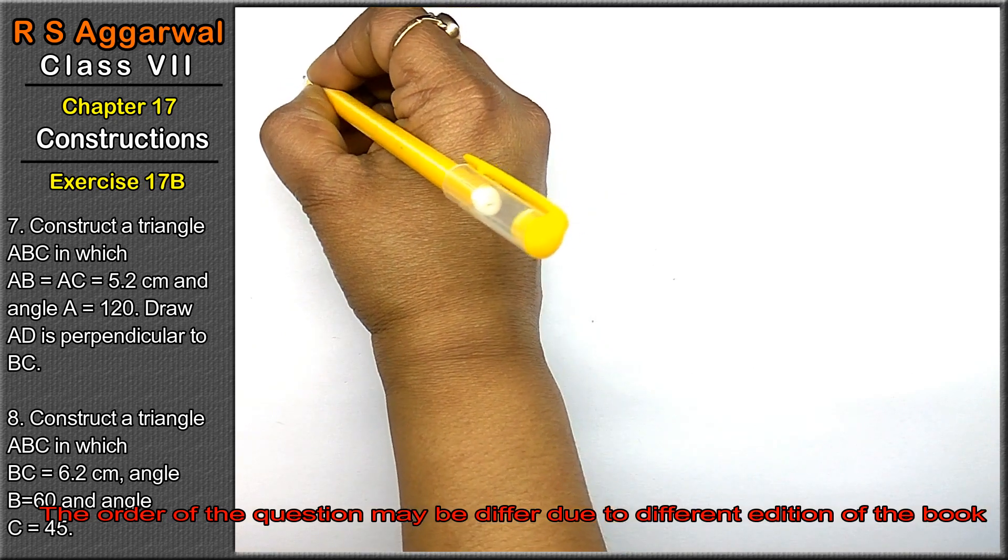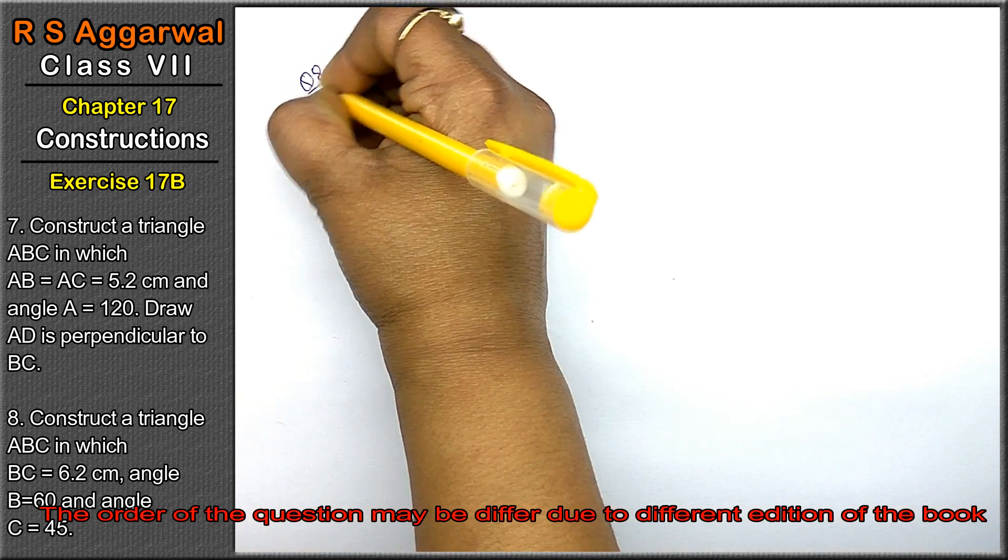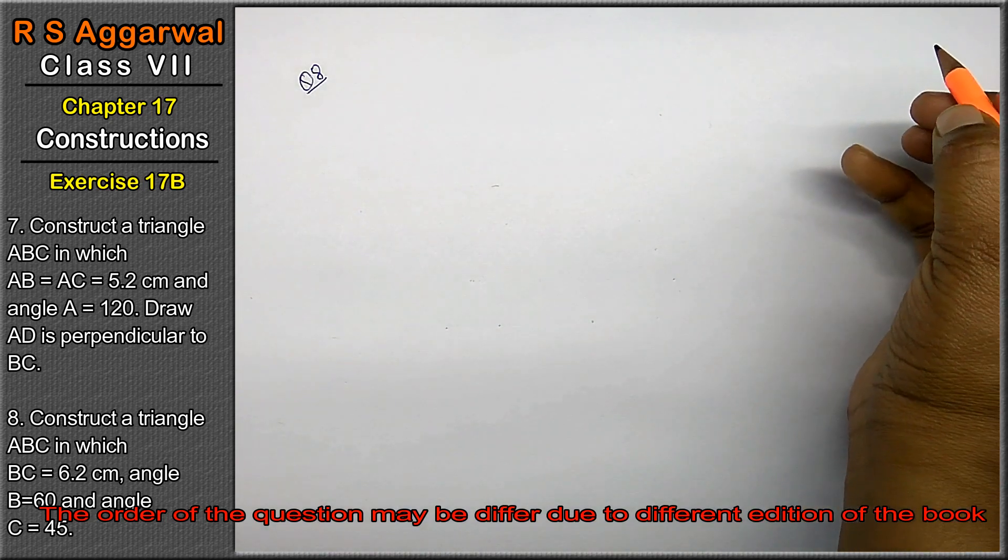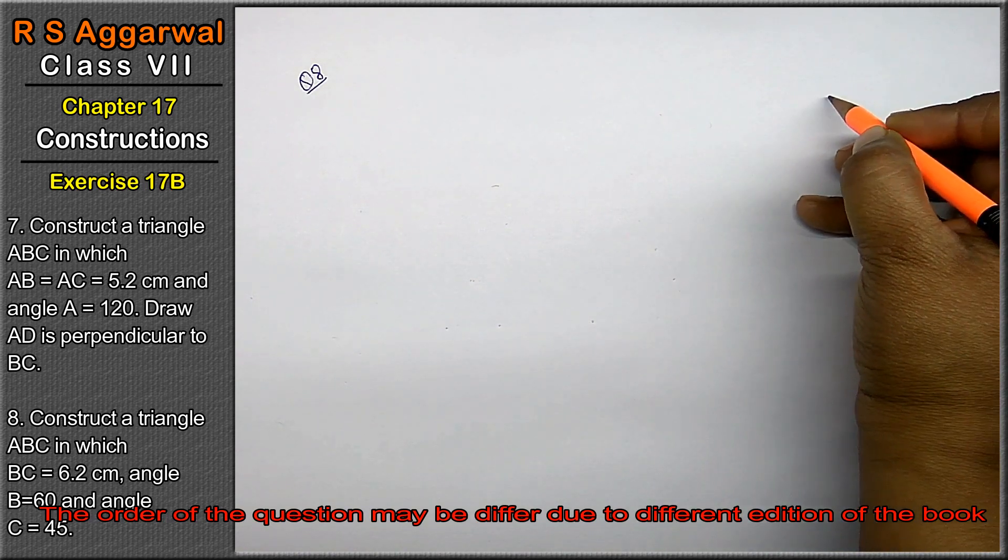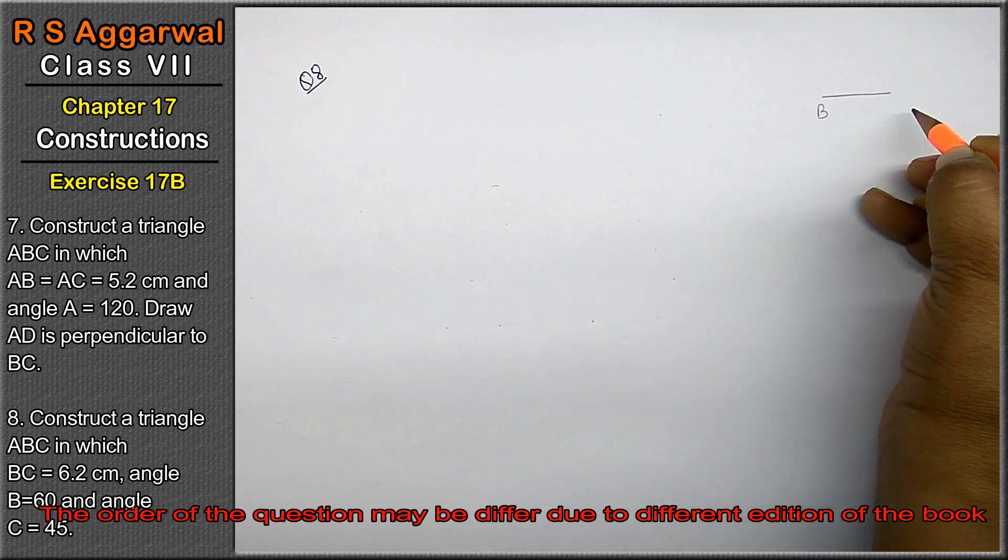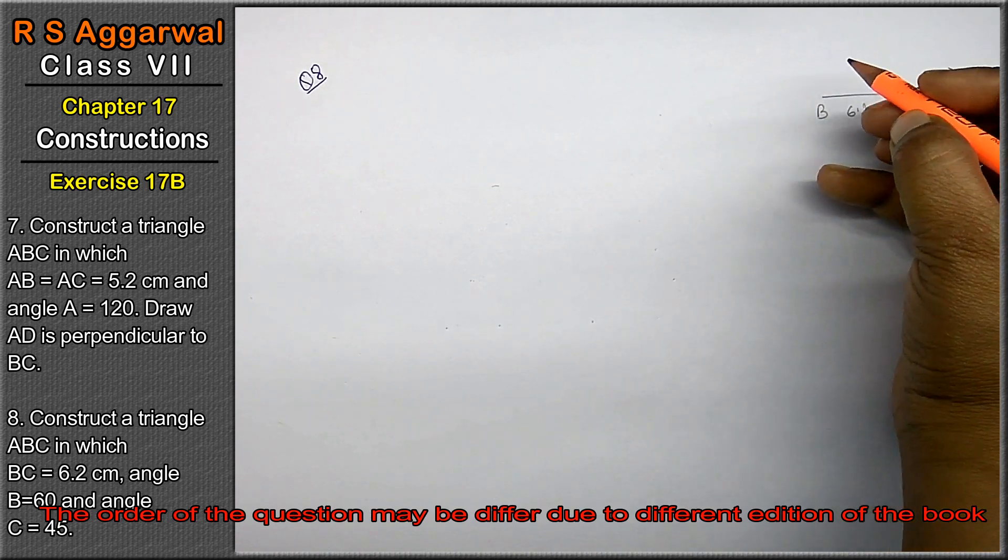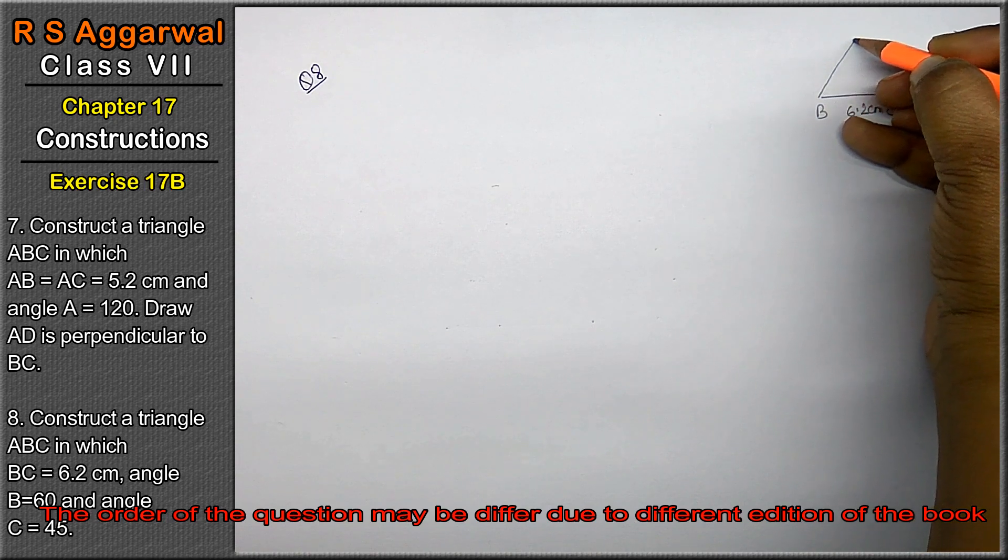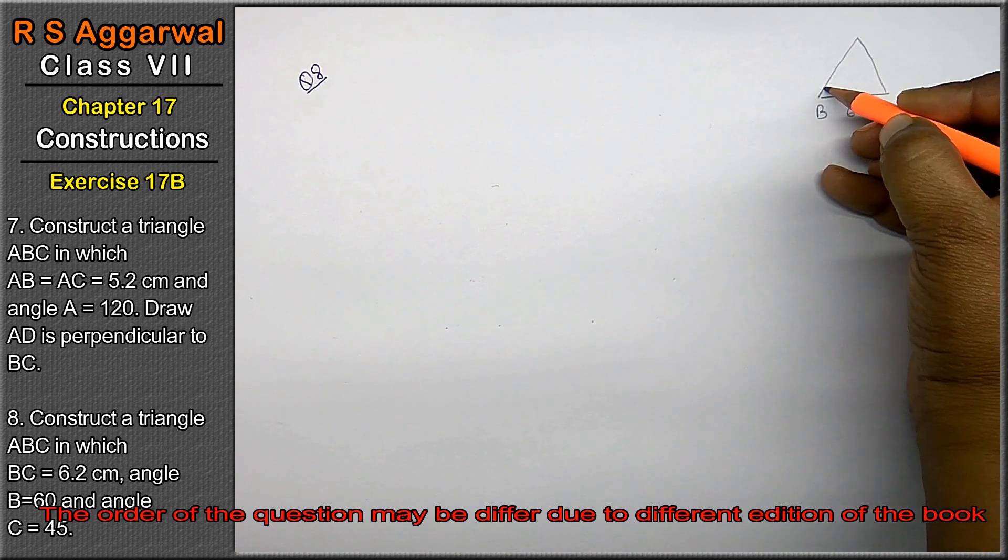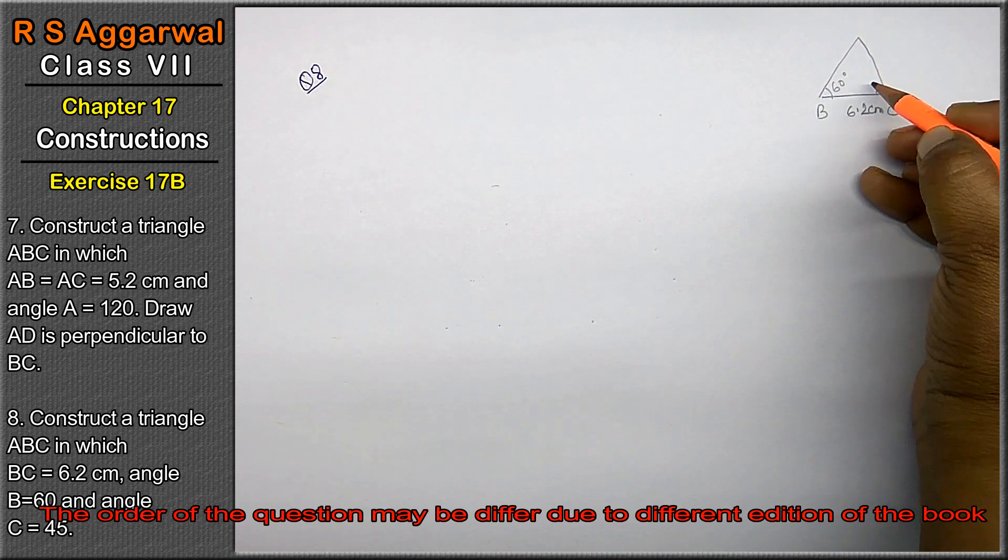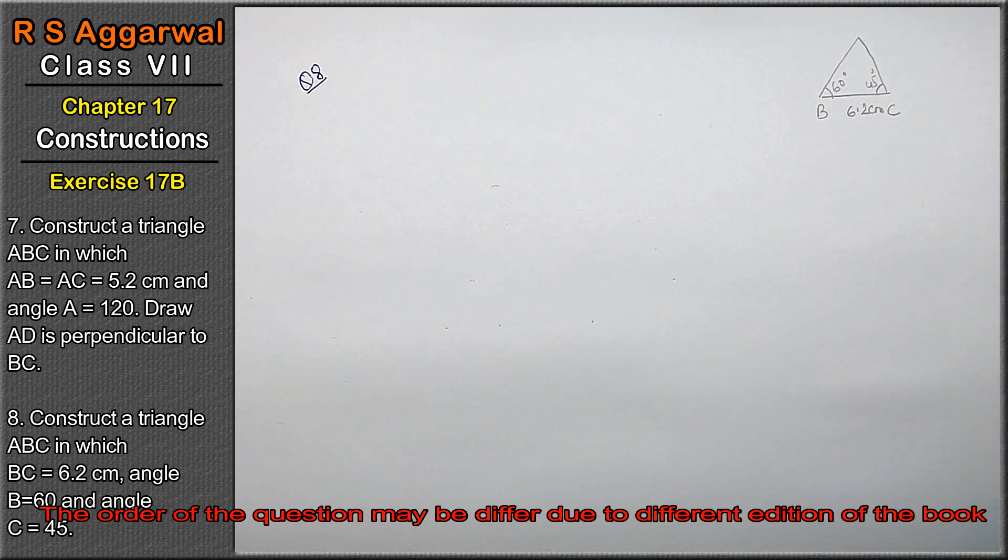Let's do question number 8 of exercise 17B, that is construction. Construct a triangle ABC. This is BC, 6.2 cm. Angle B 60 degrees. Angle C 45 degrees.